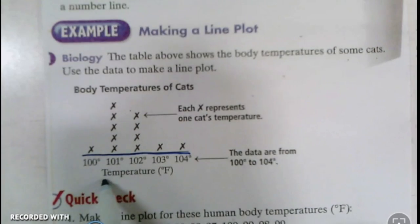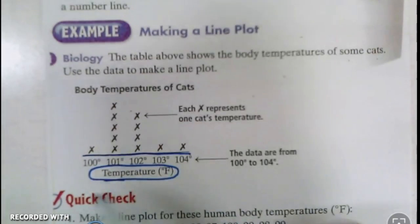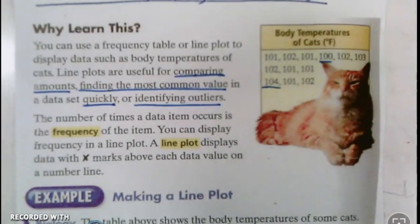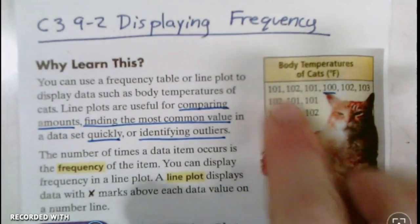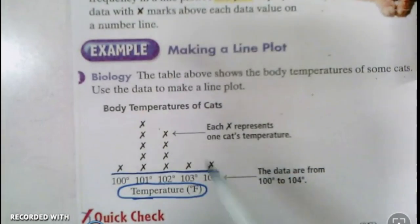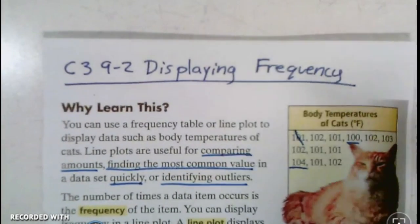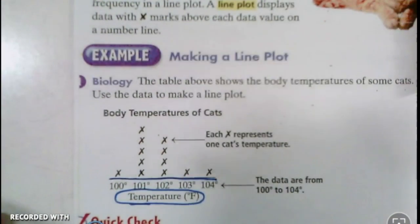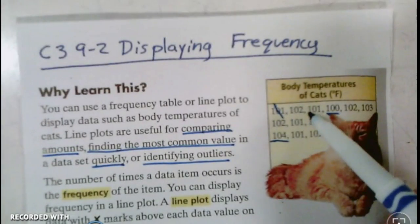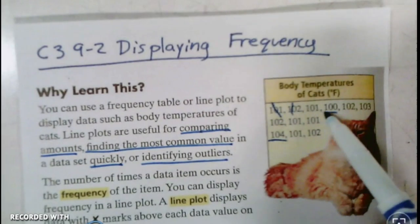I always label so that we know that this is temperature down bottom. Now I'm just going to go through and every time I see one, I'm going to put an x above that. So I've got 101, so I would do a little x by 101 and cross this one off. Then 102, I would do a little x by 102 and cross this one off.